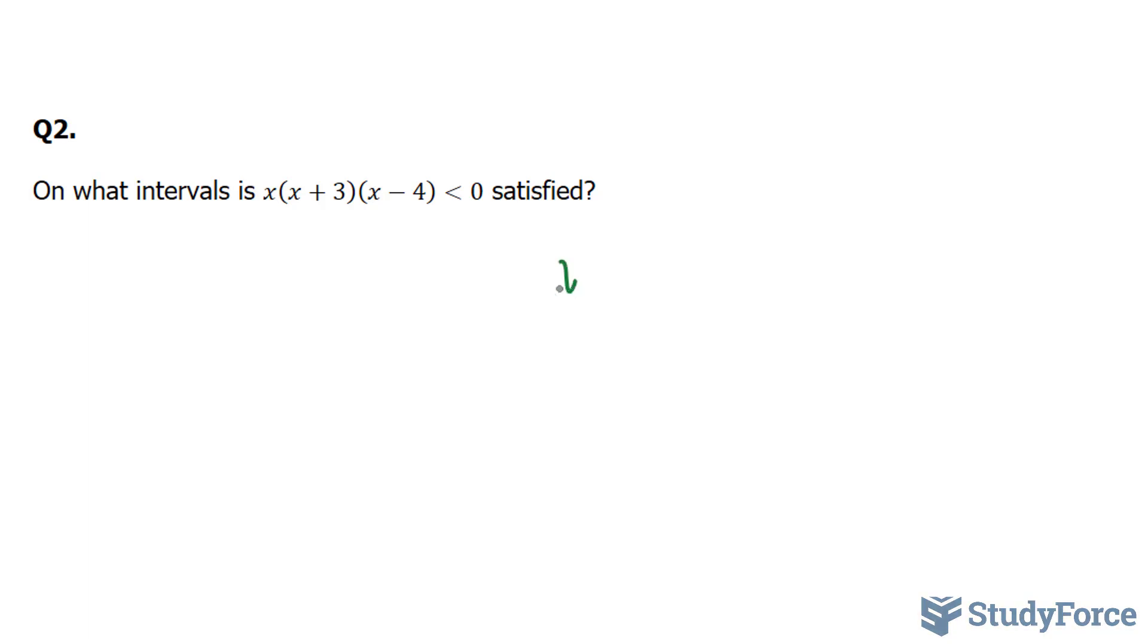We'll end up with x = 0, x = -3, and x = positive 4. Now, if you're confused on how I picked these numbers, refer back to question number 1 and I show you. The next step is to write out our intervals.